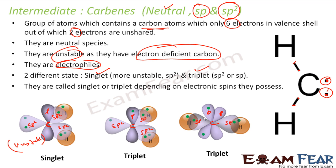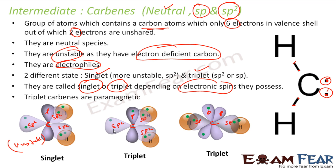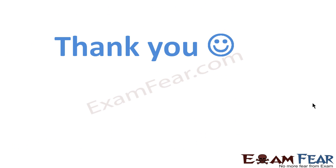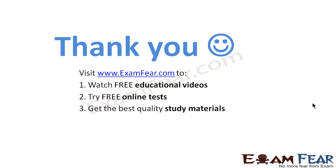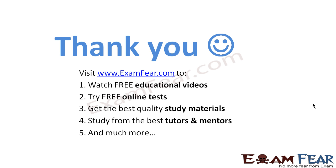The reason they are called singlet or triplet is based on their electronic spin. Triplets are paramagnetic. In the singlet state, both electrons are in the same sp2 orbital. In the triplet and sp states, the electrons are in different orbitals. Singlet carbene is more unstable. Thank you. Visit examfear.com to watch free educational videos, try free online tests, get the best quality study materials, and study from the best tutors and mentors.